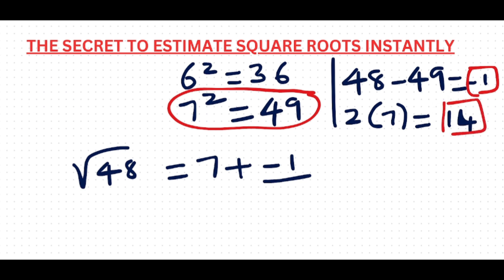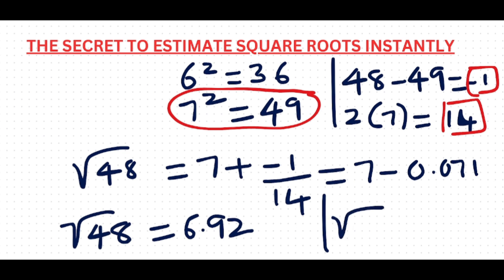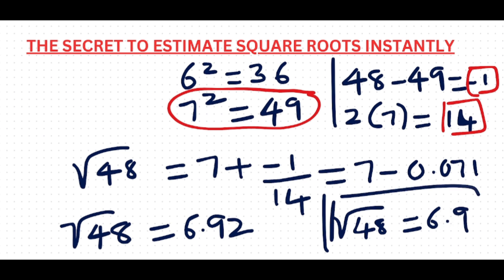To find the denominator, you do 2 times 7, which gives you 14. So you have 7 plus (negative 1 over 14), which becomes 7 minus 1 over 14. The decimal value of negative 1 over 14 is 0.071. So the square root of 48 equals 7 minus 0.071, which is approximately 6.93, rounding to 6.9.